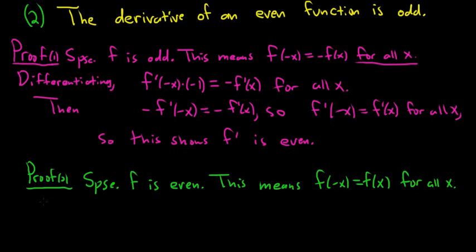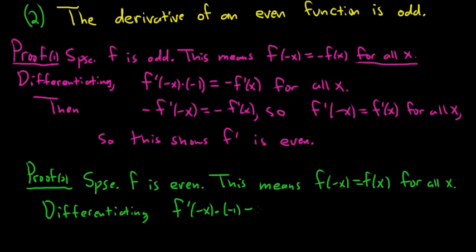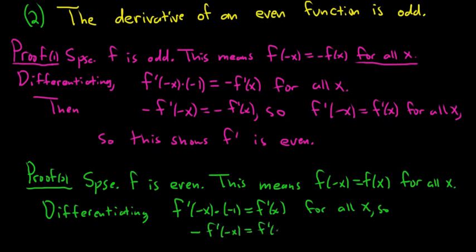Let's take the derivative and see if it works. Differentiating both sides of this equation, we use the chain rule on the left-hand side: it's f prime of negative x times the derivative of the inside, which is negative 1. And on the right side, we just get f prime of x. This is true for all x. So this means negative f prime of negative x is equal to f prime of x. Multiplying by negative 1, f prime of negative x is equal to negative f prime of x — which is the definition of odd for the derivative.